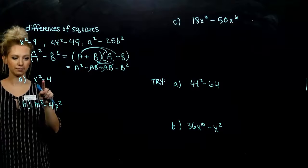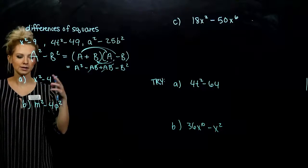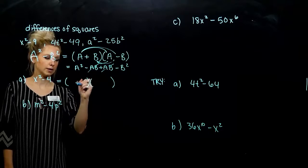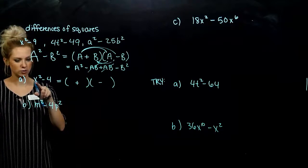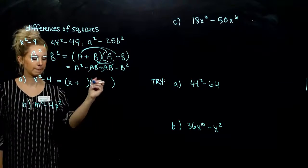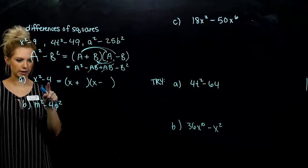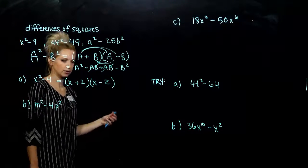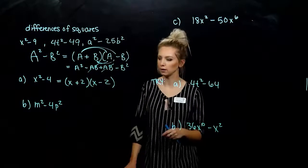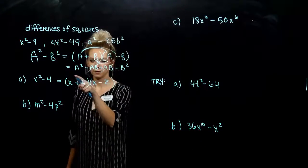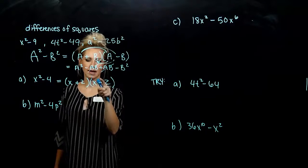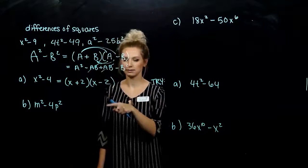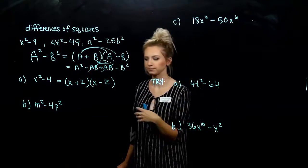Part A — is it a difference of squares? Yes. So how does it factor? I need alternating signs and the square root of the first term goes in the first spot, and the square root of the second term goes in the second. If you're not sure, FOIL it back out and check. First gives us x squared, outer minus 2x, inner plus 2x, last minus 4. We get back there.